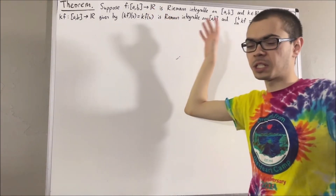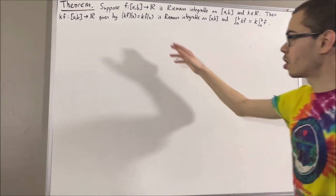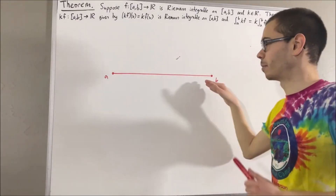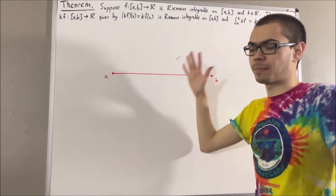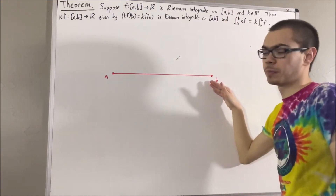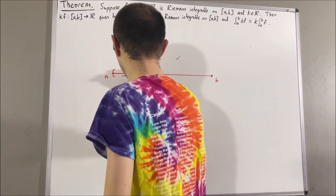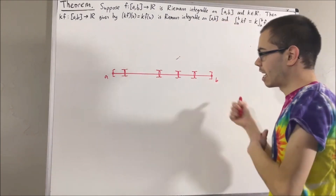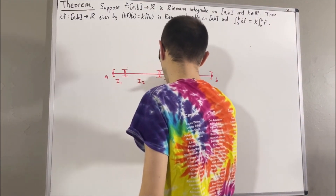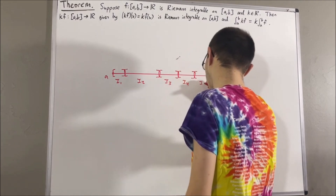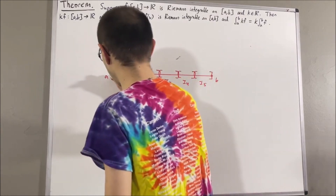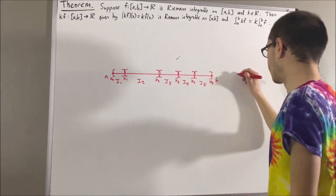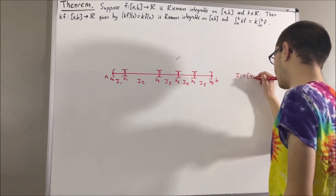Before we get into proving this theorem, let's first remind ourselves of some things. Let's consider our closed interval [a, b]. A partition of [a, b] is a collection of non-overlapping closed intervals whose union is [a, b]. For example, this collection of closed intervals would be a partition of [a, b], and we might label these intervals I₁, I₂, and so on, with endpoints x₀, x₁, x₂, and so on. In general, the sub-interval Iᵢ would be given by [xᵢ₋₁, xᵢ].